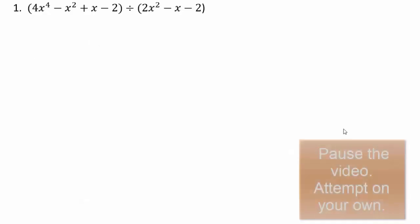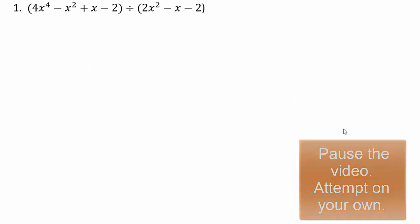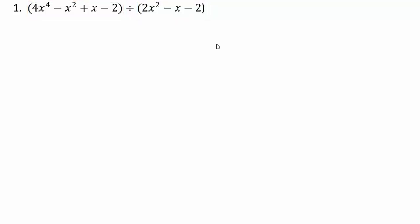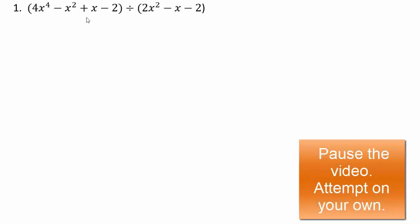Pause the video and try on your own. For polynomials, make sure the divisor and dividend are written from highest power to lowest power. If any degree term is missing, put a placeholder of zero times x to that power. In this case: 4x⁴ + 0x³ − x² + x − 2. Rewrite it with the placeholder and then continue.